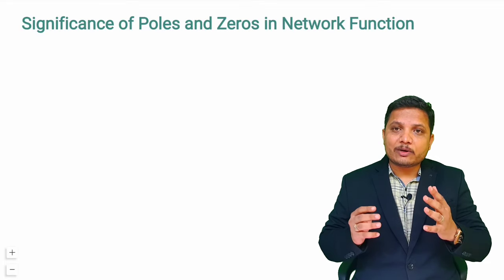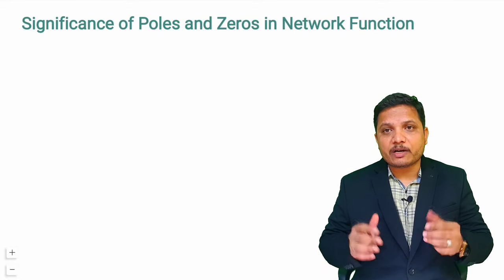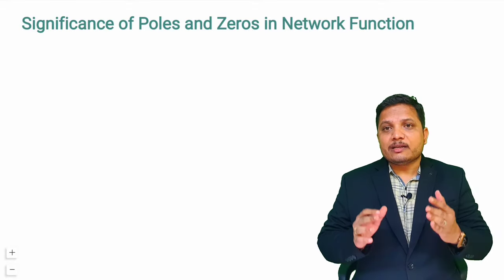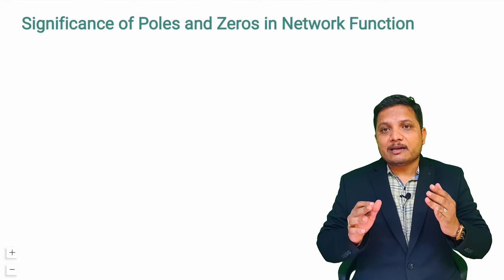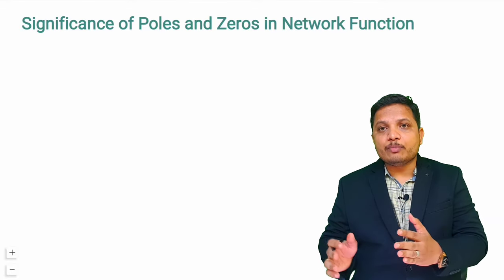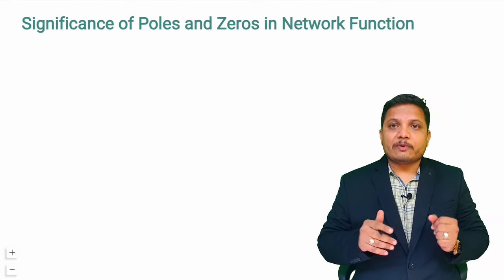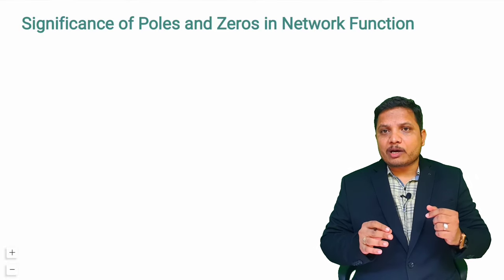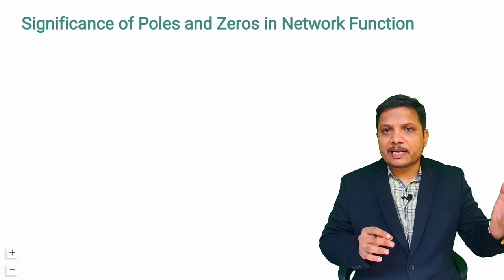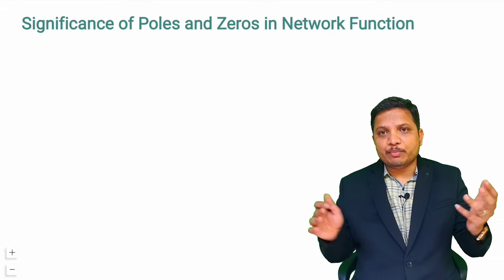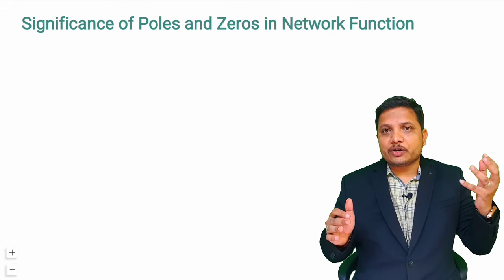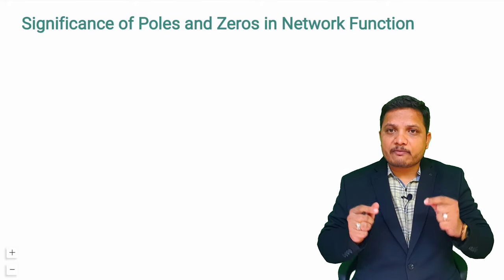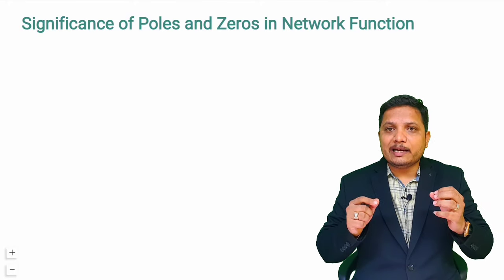Let us first understand what a transfer function is. The transfer function is a ratio of output to input. Whenever you have any electrical network, whatever response you are getting with respect to the input — the ratio of that response to the input is the transfer function of the electrical network.